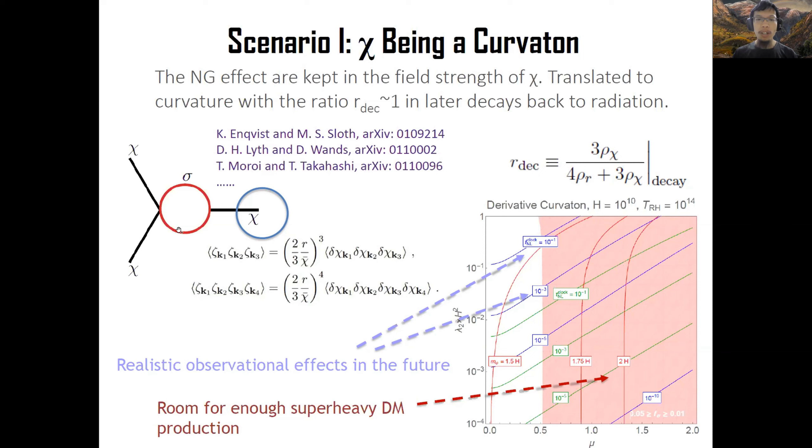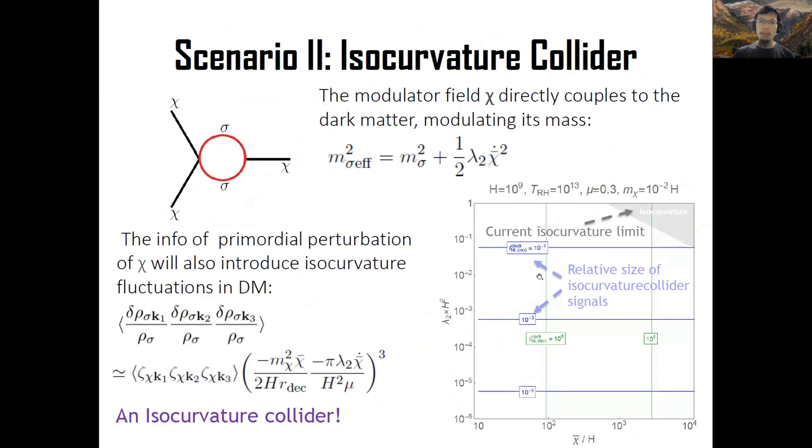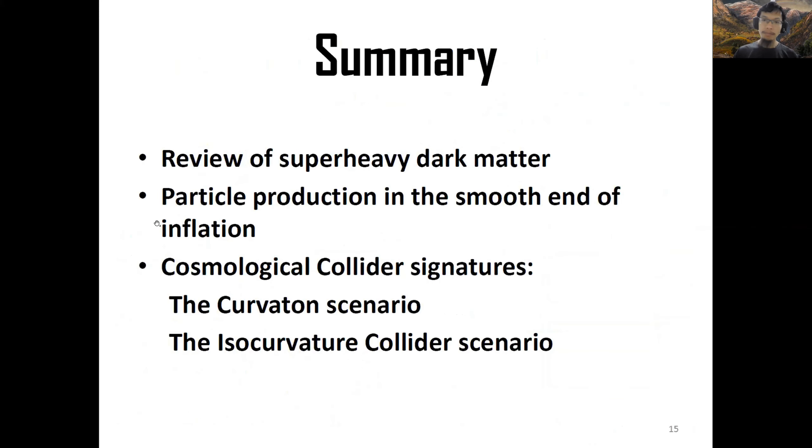We can see the three-point correlation of curvature is actually carried by these dark components. We show in this red shaded region that you have enough dark matter, you can actually have, indeed, if the coupling is not too small, a reasonable observational effect in the future. You can also have isocurvature collider, that these light fields modulate the dark matter mass, and therefore it creates the isocurvature mode in non-Gaussianity. We have the limits right here.